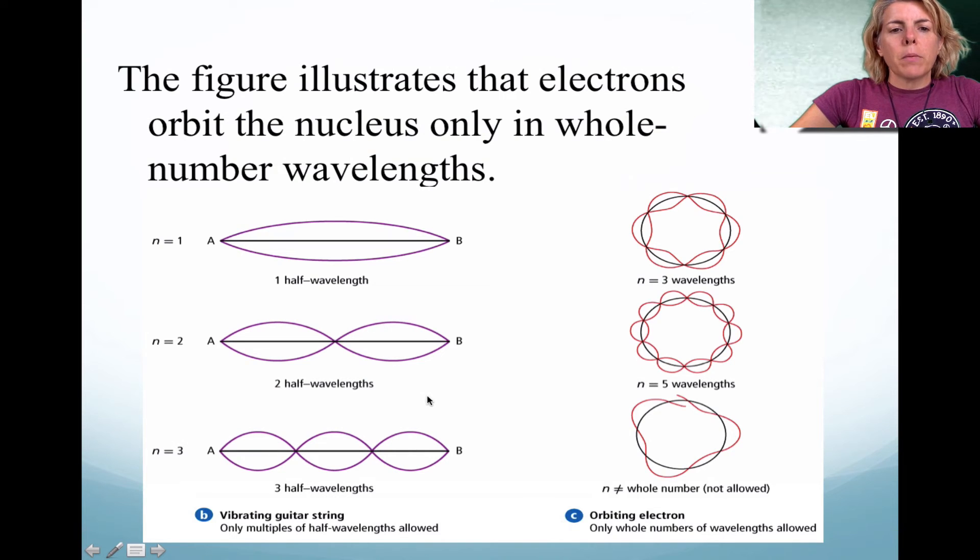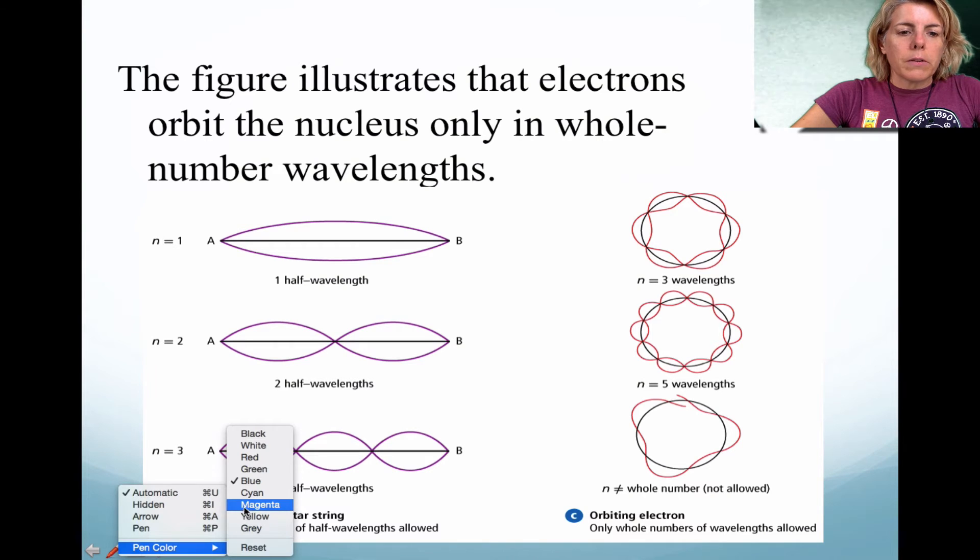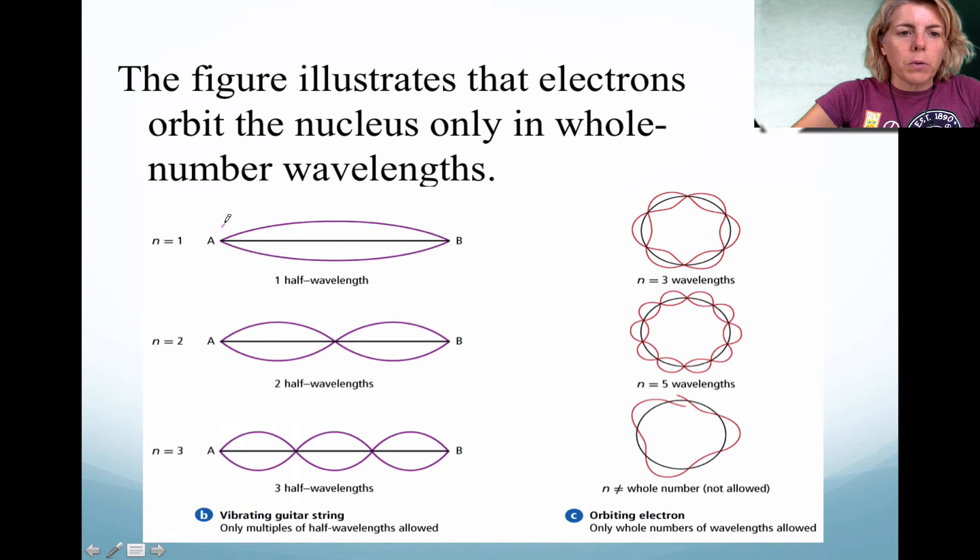Here's an example: if you're a musician, you might notice that when you are playing an instrument, because there's two fixed points, A and B, depending on how you strike the string, you might get a half wavelength, two half wavelengths, or three half wavelengths. Now, de Broglie was looking at circular wavelengths, and he noticed that you could have odd number wavelengths. So notice that it's a different phenomenon when you have two fixed points versus a circular wavelength.